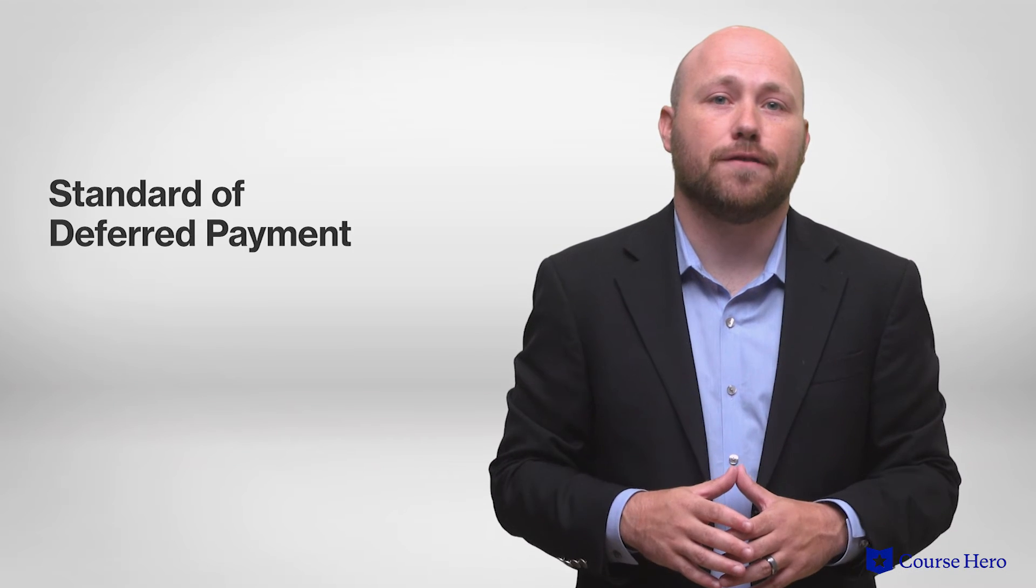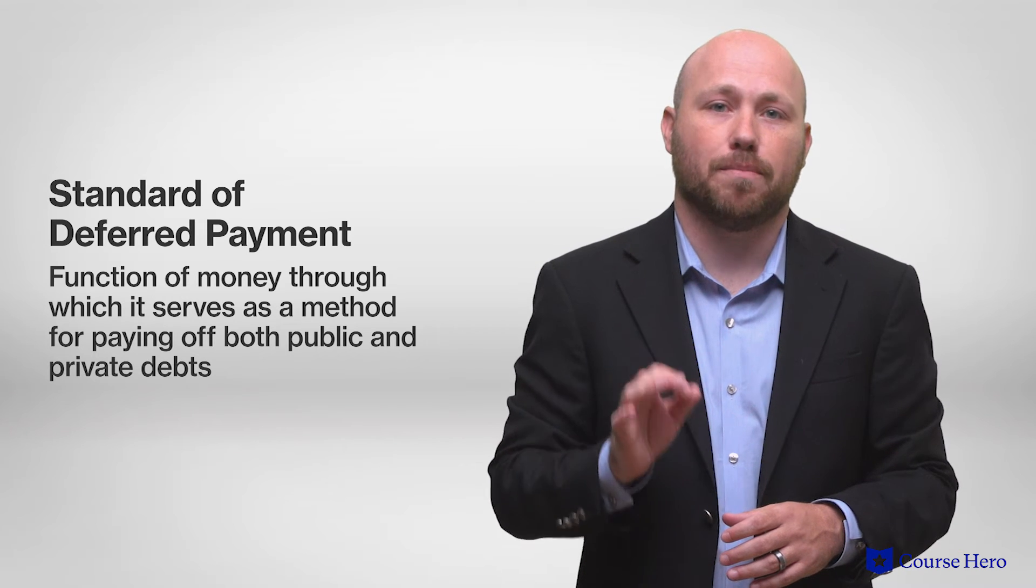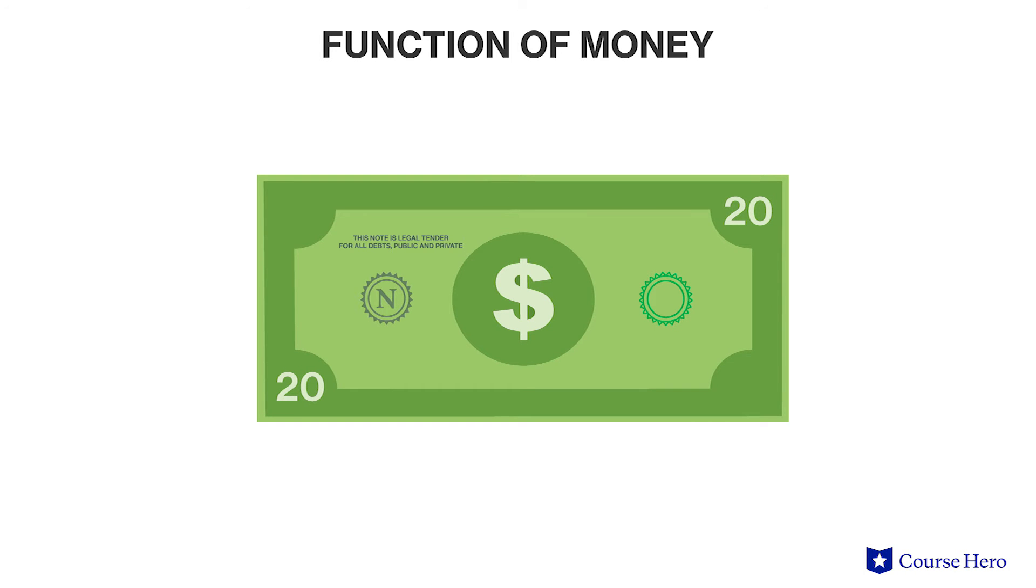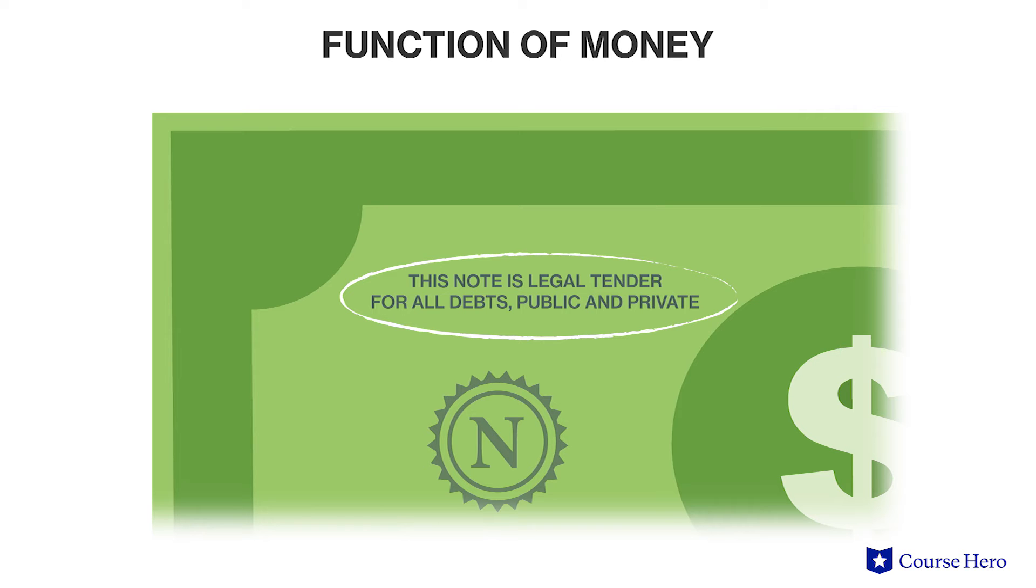Money also serves as a standard of deferred payment, the function of money through which it serves as a method for paying off both public and private debts. This function of money also enables individuals to contract for future payments and receipts. In fact, U.S. paper currency, known as Federal Reserve notes, says this note is legal tender for all debts, public and private. This statement is how the U.S. government has decreed that its fiat money has value. Saying the government will accept this paper from citizens who owe it provides assurance that this paper is, in fact, worth something.